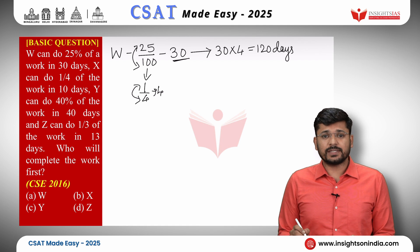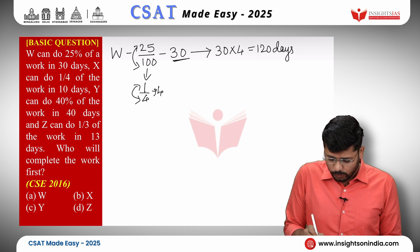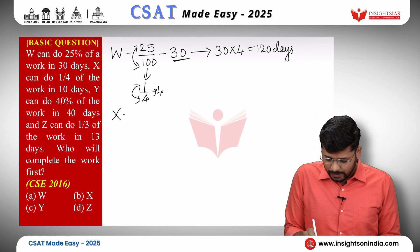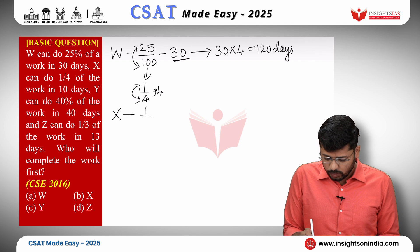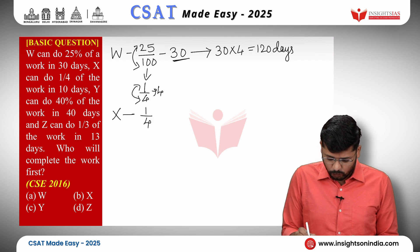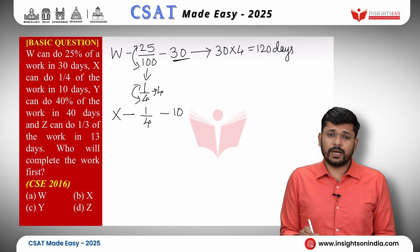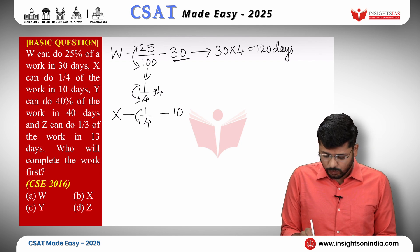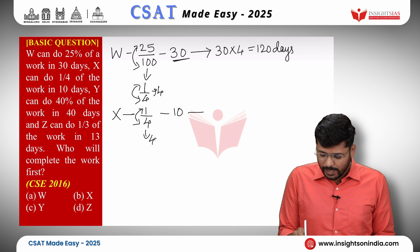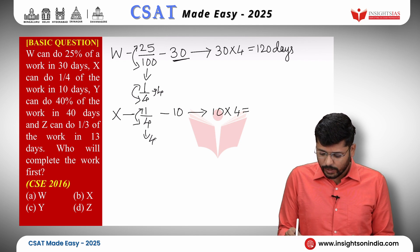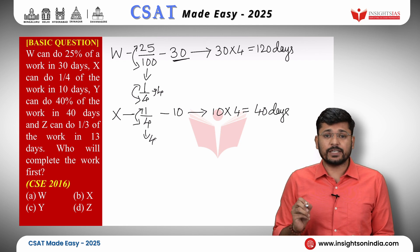Now for X. X does one-fourth of the work in 10 days. 1/4 is already in reduced form. Inversing 1/4 gives 4, and multiplying 4 by 10 days gives 40 days. So X takes 40 days to finish the work.